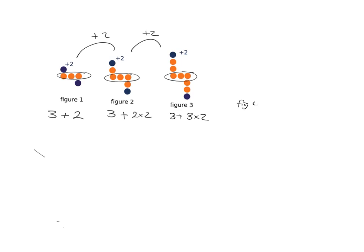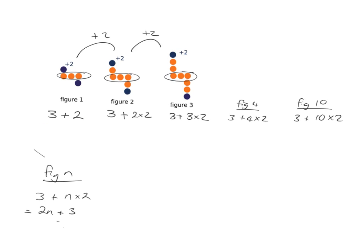And then in the third one you've still got the 3 in the center but this time you've added 3 lots of 2 dots. So then that gives us an easy pattern we start to see. Figure 4 will have the 3 in the center but now 4 lots of 2 dots. And in figure 10, the pattern continues — you'll have 3 in the center but now 10 lots of 2 dots. So the answers are 5 dots, then 7 dots, then 9 dots, then 11 dots, and figure 10 will be 23 dots. But just remember — don't get to this answer too quickly, because it was seeing it structured like this that helped us see the pattern.